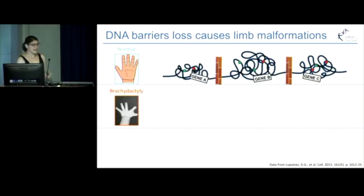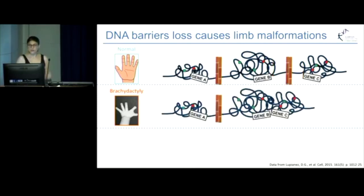But in brachydactyly, which is abnormal shortening of the fingers, what the researchers show that in early development, there is a deletion of this boundary which actually fuses these two hubs together, meaning that gene B and C are now contacting incorrect on-and-off switches, giving rise to this malformation.